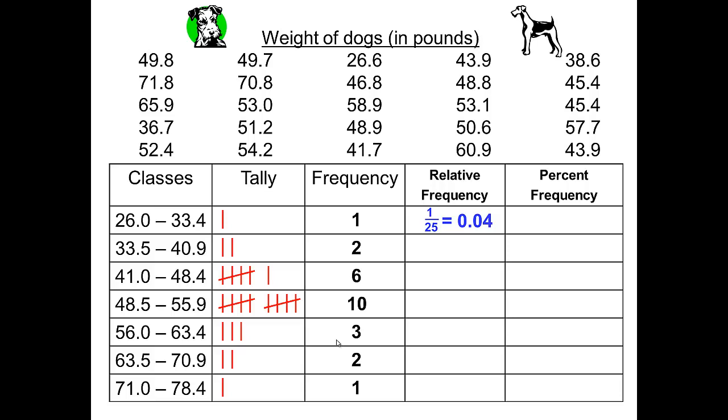The next class has 2, so that will be 2 over 25, which is equal to 0.08. 6 over 25 gives us 0.24, 10 over 25 gives us 0.40, 3 over 25 gives us 0.12, 2 over 25 gives us 0.08, and 1 over 25 gives us 0.04.